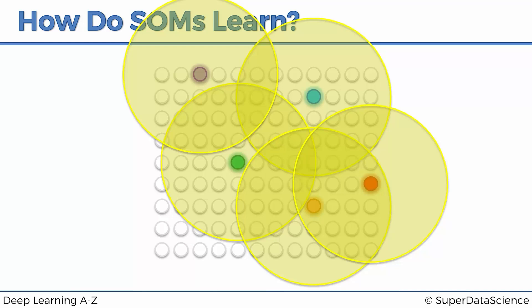They are all dragged closer and closer, and there's a bit of resistance or push and pull between them. For instance, the blue node is dragging a particular node one way, the orange node is dragging it another way, the red node is dragging it that way, and the green node is dragging it yet another way. It's a bit of a battle between them, but that's normal. That's what happens in the self-organizing map as you go through all of your rows in your data set.